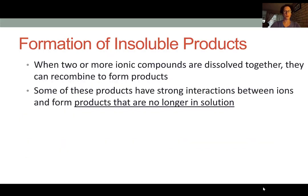When two or more ionic compounds are dissolved together, they can recombine to form products. As you'll recall from those previous lessons, when we have an ionic compound dissolved in water, it forms what we call an aqueous solution. This means that the cation and anion completely separate in space and become surrounded each by water molecules.